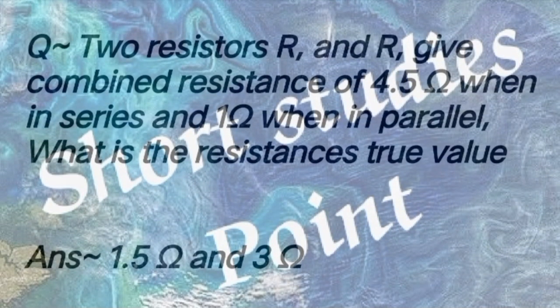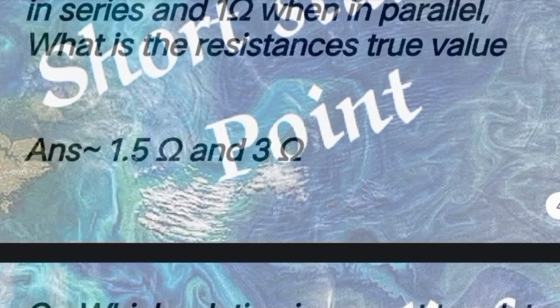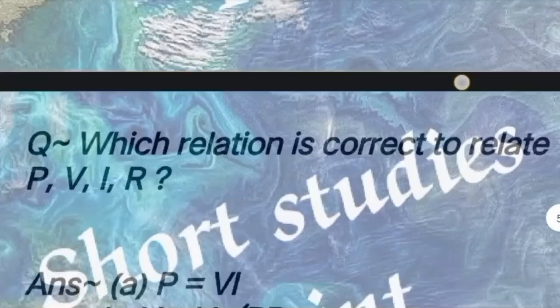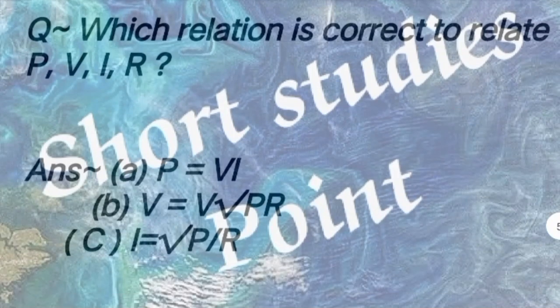Next question: Two resistors R1 and R2 give a combined resistance of 4.2 ohms when in series and 1 ohm when in parallel. What are the resistance values? Answer: 1.5 ohm and 3 ohm.